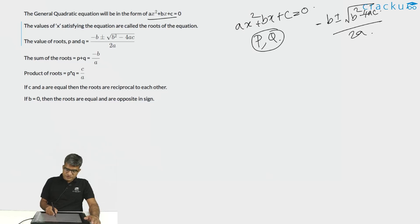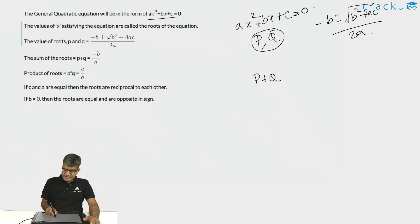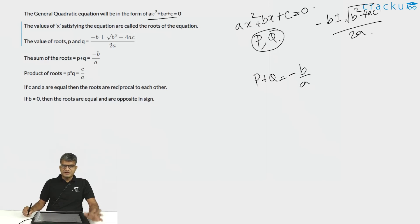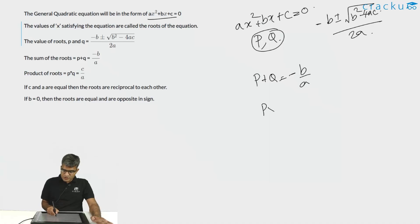The sum of the two roots, P + Q, is equal to -b/a. The product of the roots, P × Q, is equal to c/a.